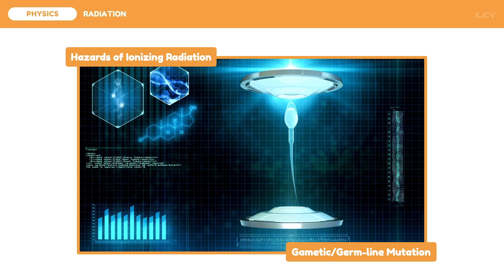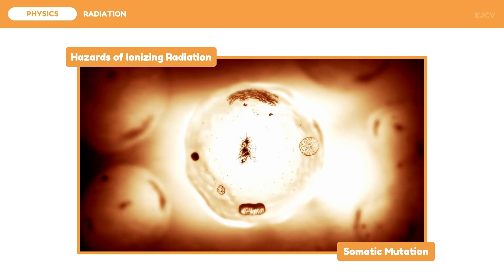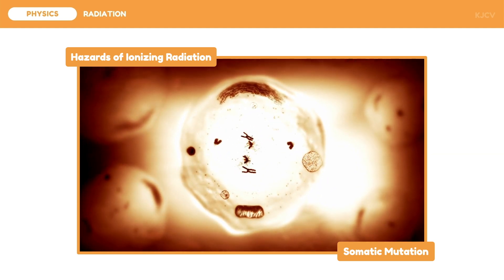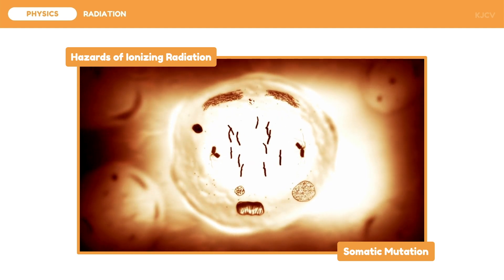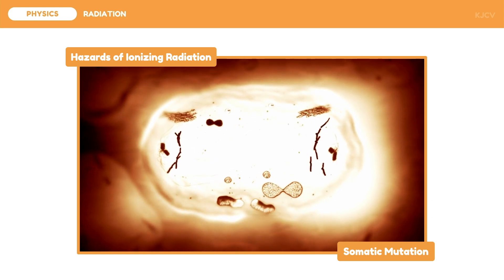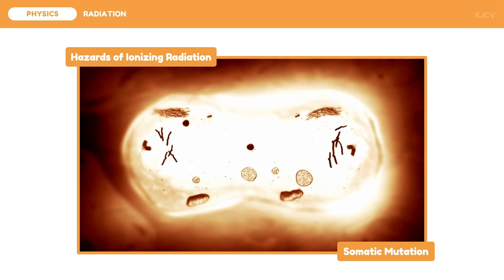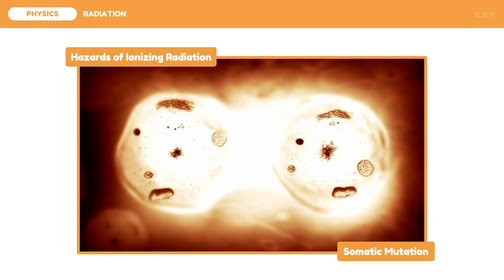This genetic mutation is called gametic or germline mutation. This teaches us to be responsible with the use of radiation because the effects may be passed on to the next generation. Another type of mutation is somatic mutation, which cannot be passed on to the next generation. This happens when certain body parts become exposed to too much radiation.